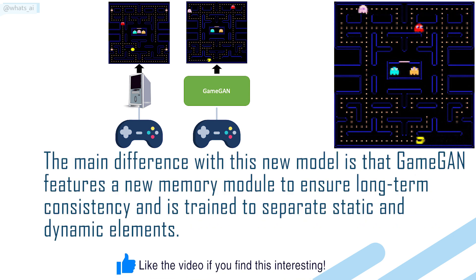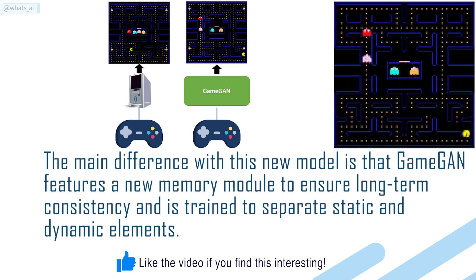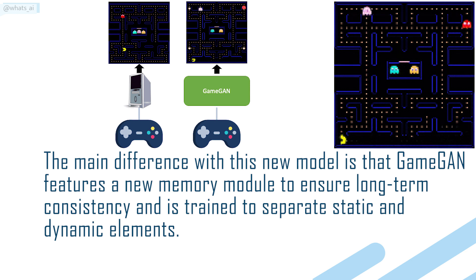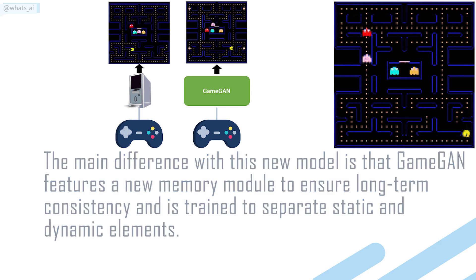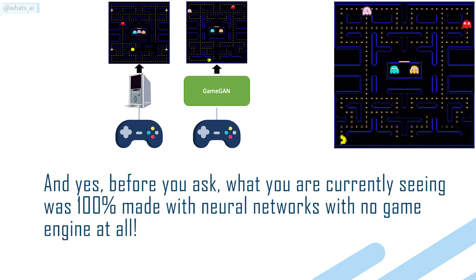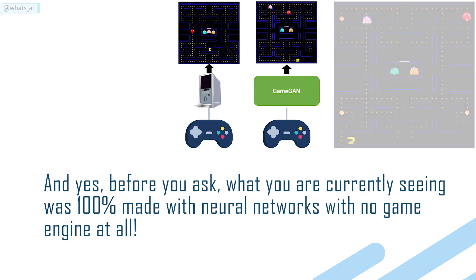The main difference with this new model is that GameGAN features a new memory module to ensure long-term consistency and is trained to separate static and dynamic elements. And yes, what you are currently seeing was 100% made with neural networks with no game engine at all.